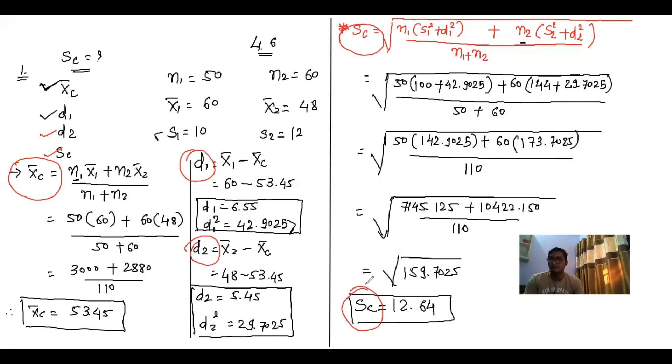This sum is now over and so is Chapter 4. The process is: first find x̄c, then find d1 and d2, then apply and simplify the SC formula. From the next class I am going to start Chapter 5: Skewness. If you have any doubts in this chapter, please contact me. Thank you.